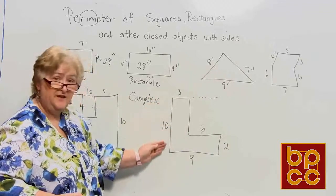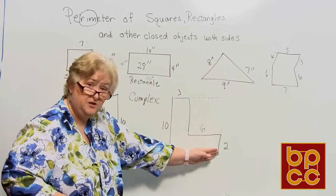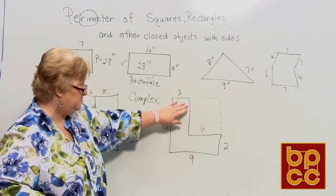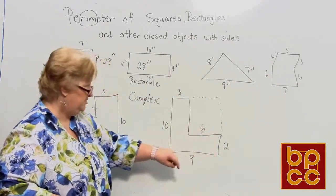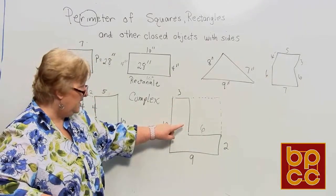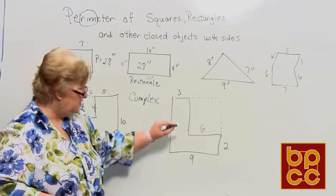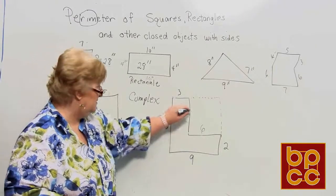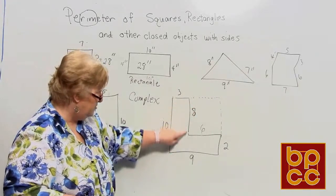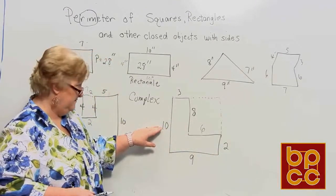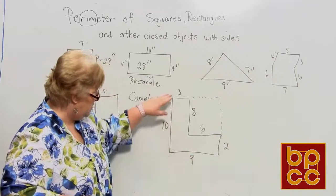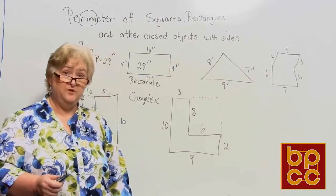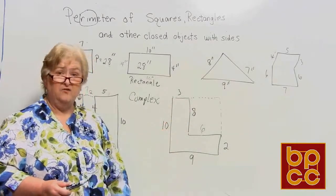Now for the missing vertical: the full vertical line is 10, and one segment is two. Two plus something equals 10, so the missing vertical is eight. Let's verify: vertical eight plus vertical two equals vertical 10, and horizontal three plus horizontal six equals horizontal nine. Now add up every single number for all identified sides to get the complex perimeter.